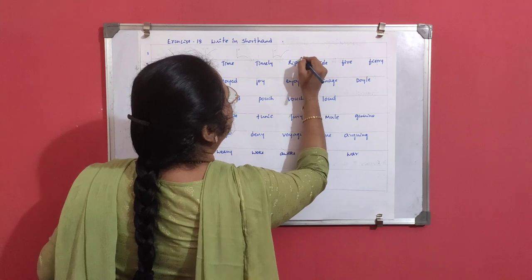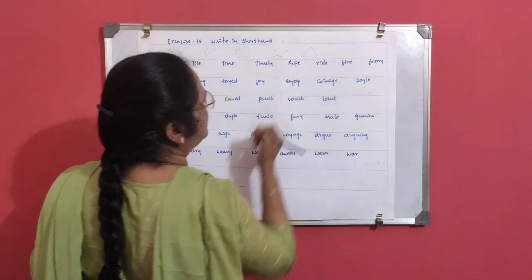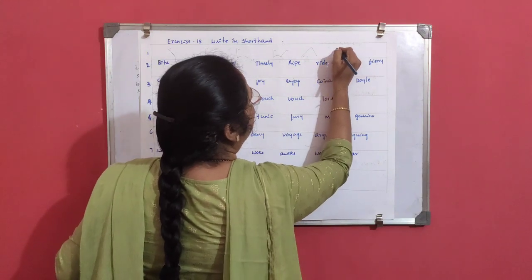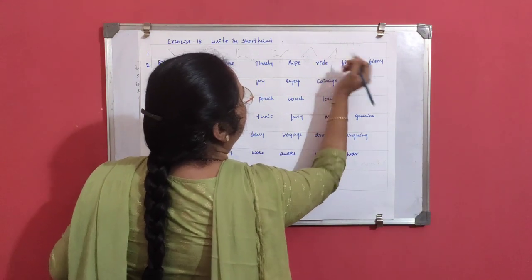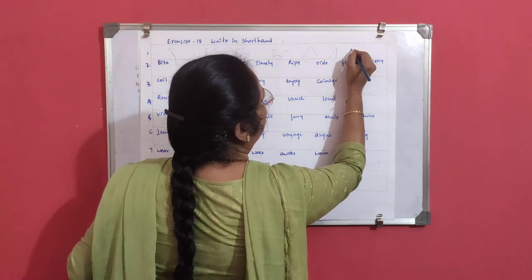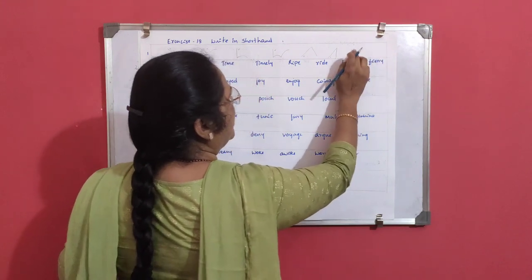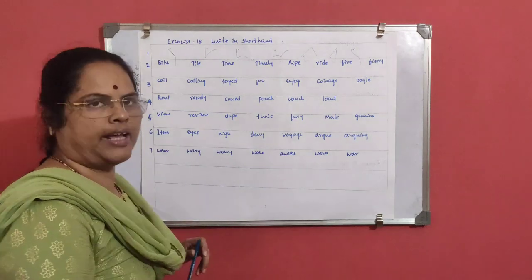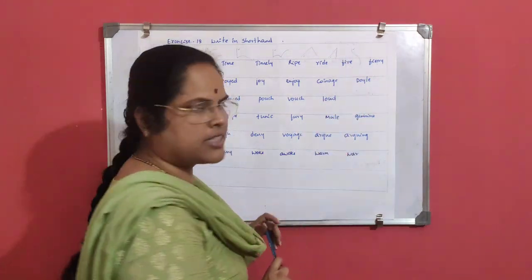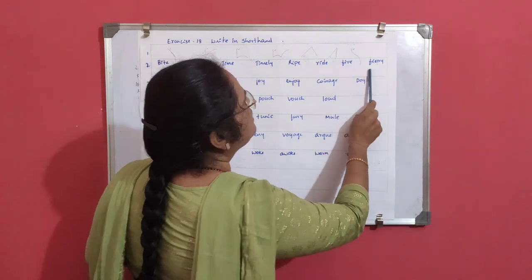Write: upward R, P. Ride: upward R, D, I diphthong. Fire: F above the line, downward R, I diphthong. Since we mark the I diphthong at the first place, the first stroke should be above the line.